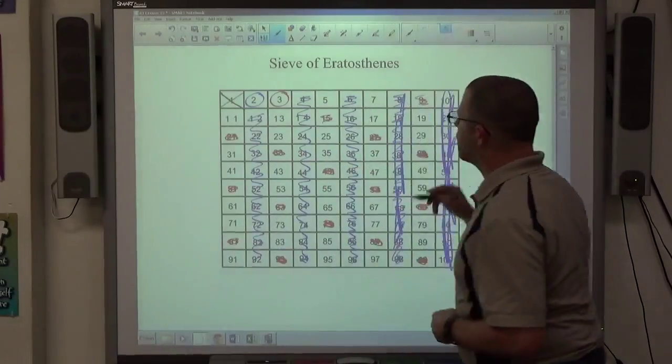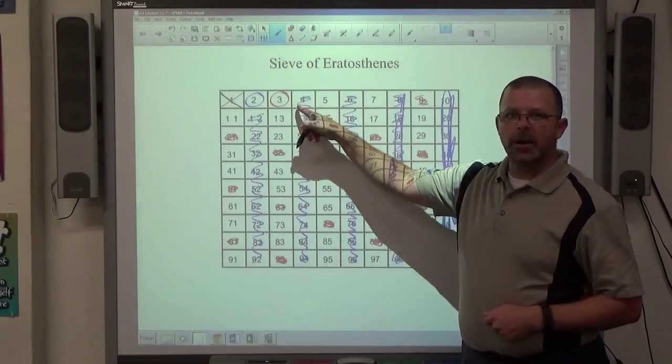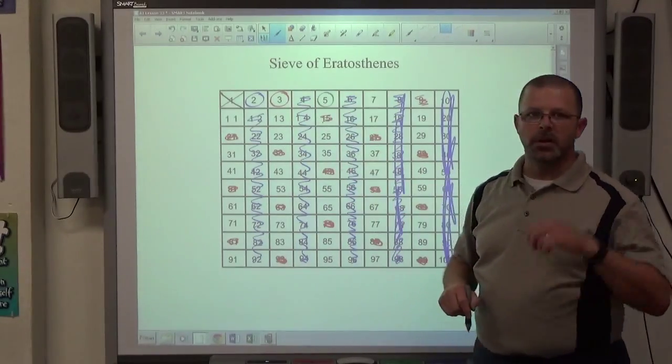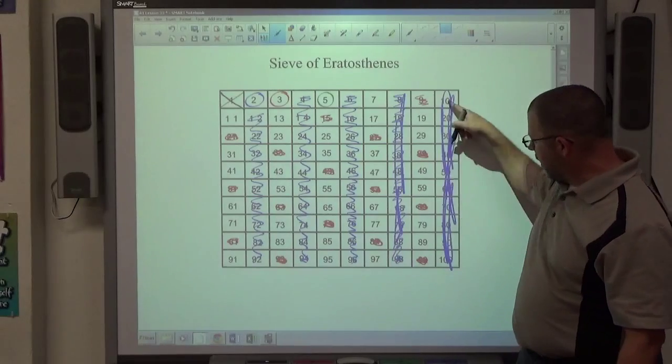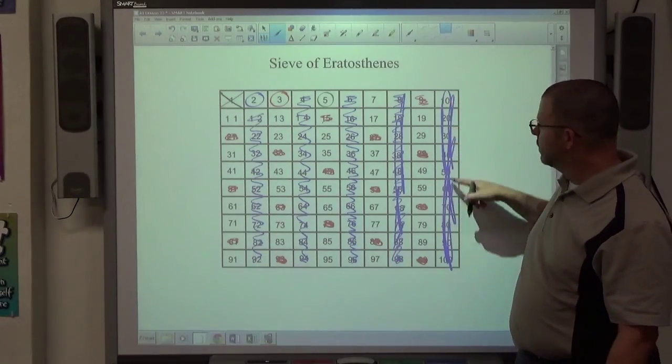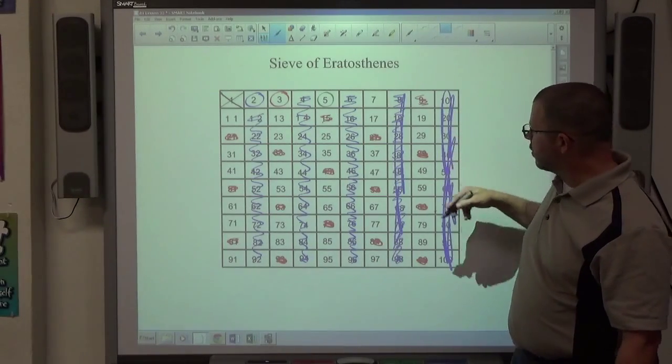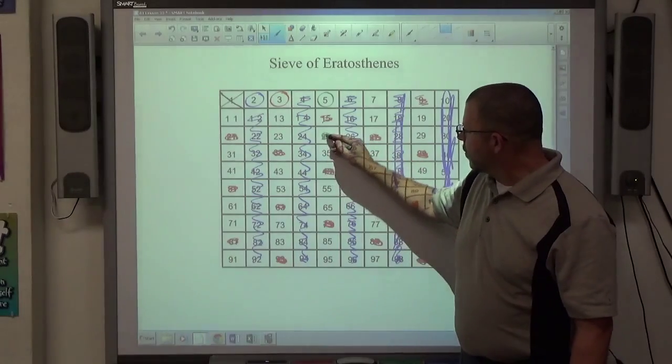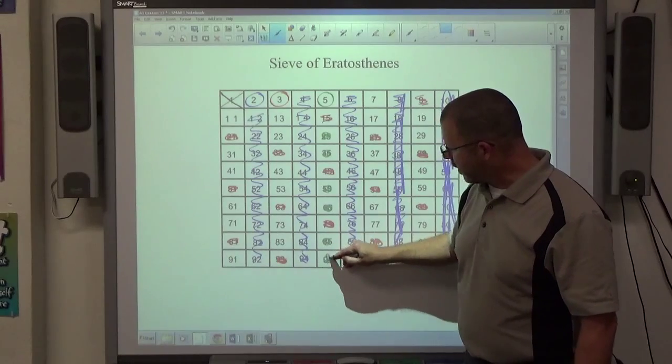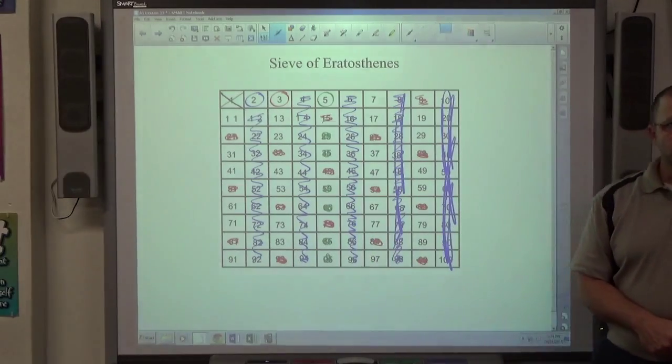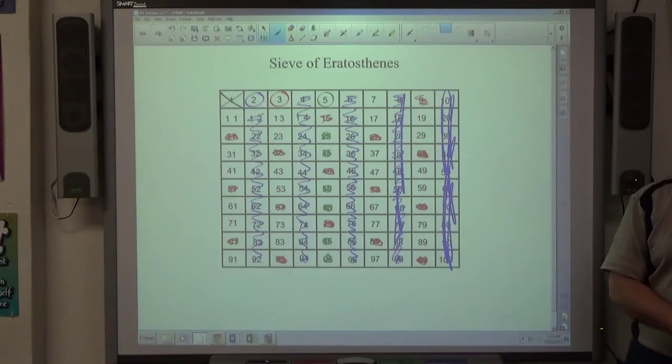Moving right along. The next number on the list, 4's already struck out. So the next number on the list is 5, that's a prime number. Every multiple of 5 gets thrown out. All the multiples of 10 are already gone. 5 times 2, 4, 6, 8, and so on. 5 times 5 is 25. 5 times 7, 35. 5 times 11, 5 times 13, 5 times 17, 5 times 19. Those are only multiples of 5 that haven't already been struck out.